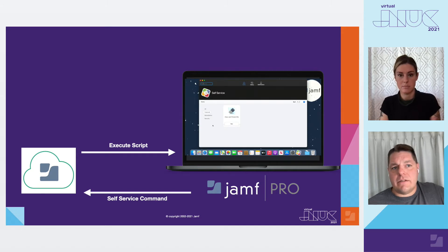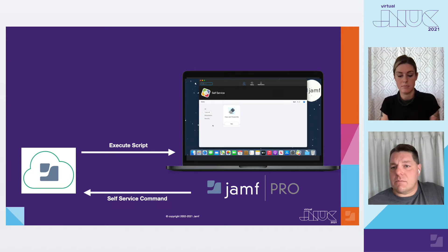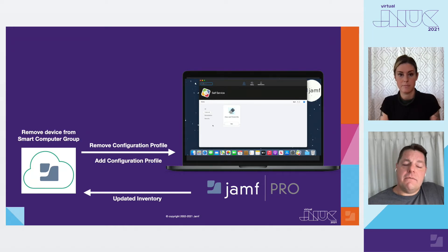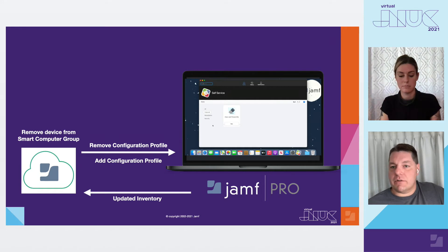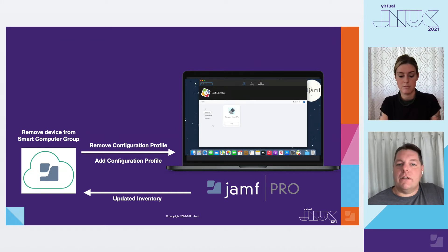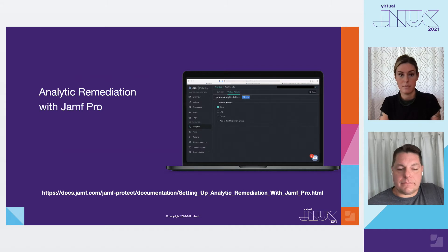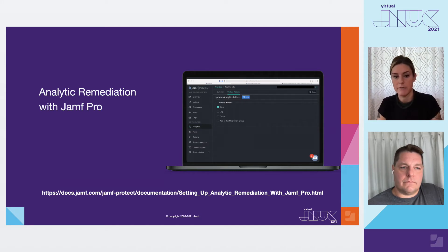With an automated policy, Kelly then told the computer to run a script to clear the extension attribute and update the inventory in Jamf Pro after she investigated the machine. This then removed the computer from the smart computer group that restricted access. The updated inventory removes the device from the smart computer group, which tells the Jamf Pro server to send an Apple Push Notification Services (APNS) command to remove the config profile for restricting access and add the config profile to return normal access to the computer.